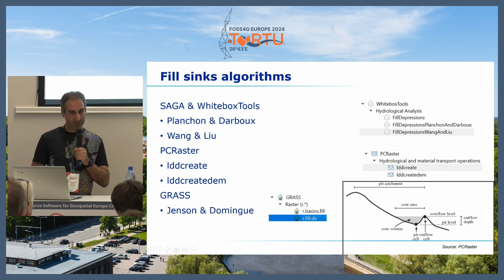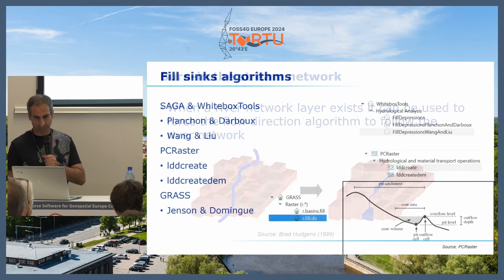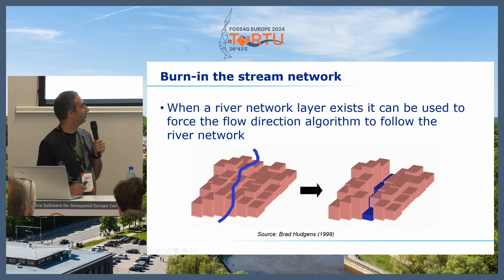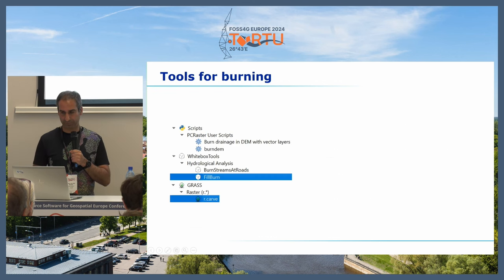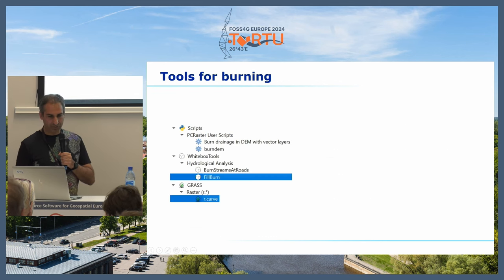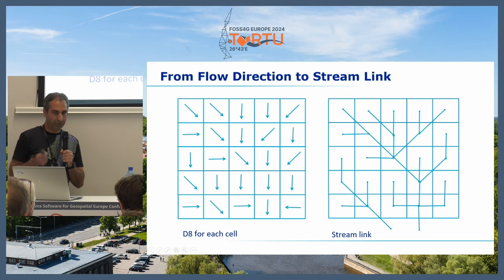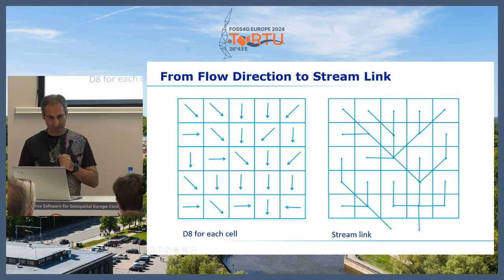GRASS uses the Jensen and Domingue algorithm with the r.fill.dir tool. If you have a river network available, you can burn it into the DEM to force the water to follow that network — an optional step. You can also derive the stream network entirely from the algorithms. For burning, Whitebox tools has the fill-burn tool and GRASS has r.carve. I have some videos on my YouTube channel if you want to know more. Generally these are complicated procedures that cause a lot of errors, so always be careful and test well what works in your area.